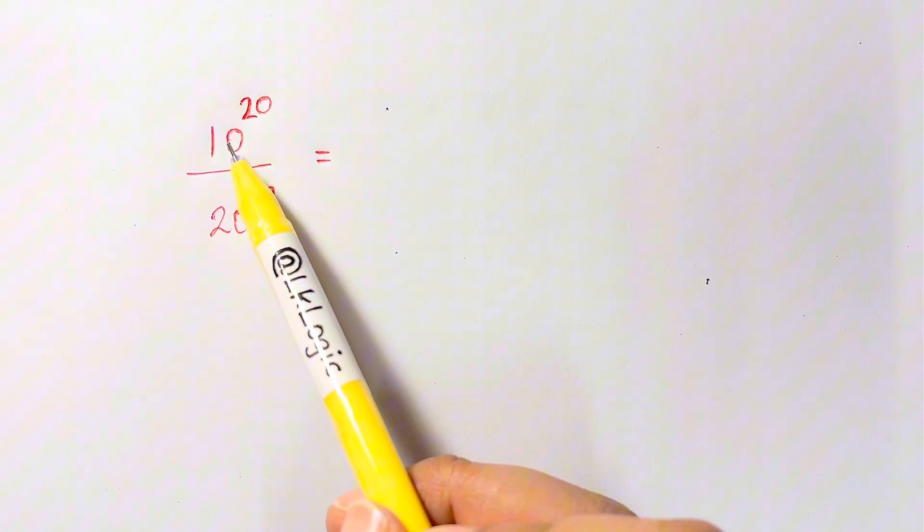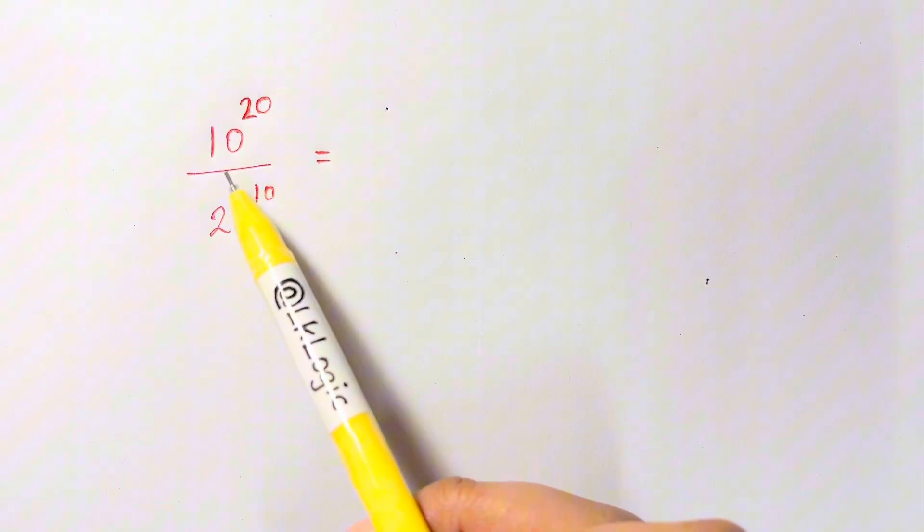Hi guys, here we have a nice exponential problem. 10 raised to 20 over 20 raised to 10 equals what?